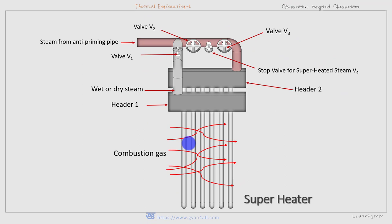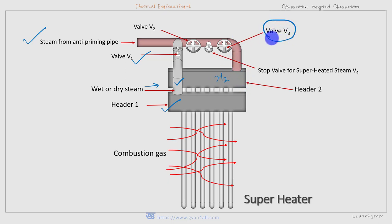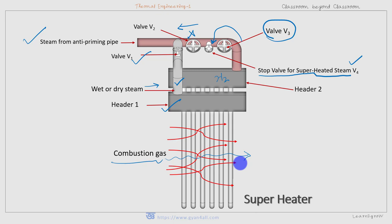This is a simple 2D view important from an examination point of view. Steam from the anti-priming pipe enters header one while valve V1 is open. From header one, steam passes through a series of tubes and goes to header two. With valve V3 open and valve V2 closed, it flows through the steam stop valve for superheated steam and goes to the turbine. The combustion gases transfer heat to the tubes, converting wet or dry steam to superheated steam.